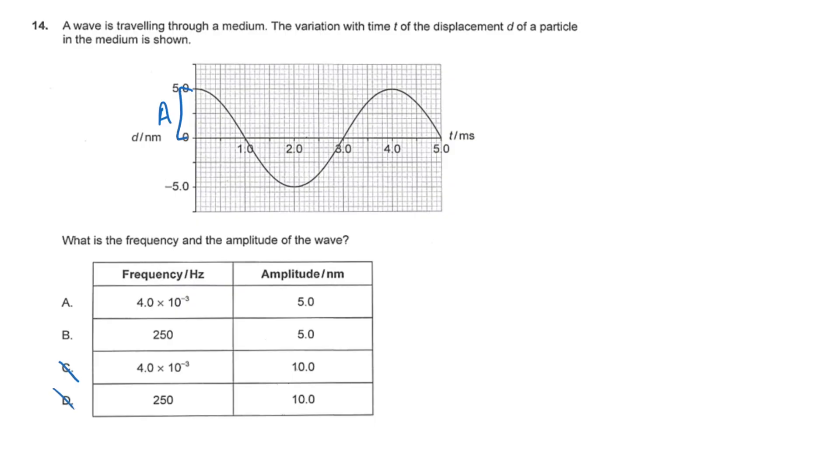What about frequency? Frequency is equal to 1 over the period. So what is the period? Well, it starts at 5 nanometers, and one wavelength later, it is back at 5 nanometers. And that took 4 milliseconds. So our period is 4 milliseconds.